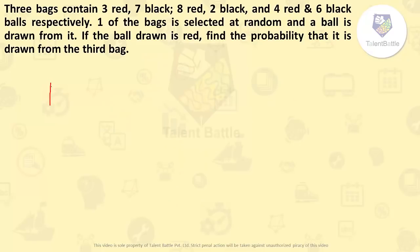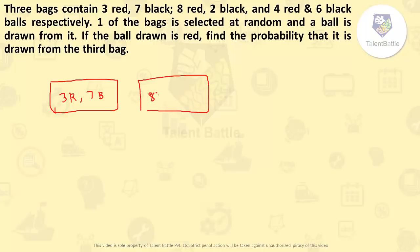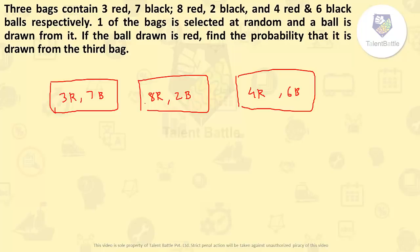Three bags contain: first bag contains three red and seven black balls. Second bag contains eight red and two black balls. And the third bag contains four red and six black balls. One of the bags is selected at random and a ball is drawn from it. If the ball drawn is red, find the probability that it is drawn from the third bag.